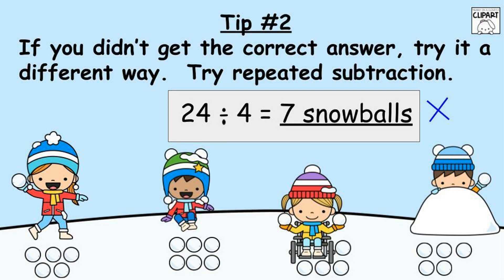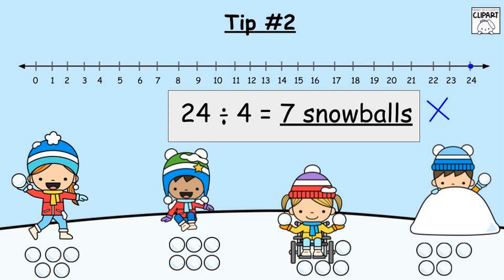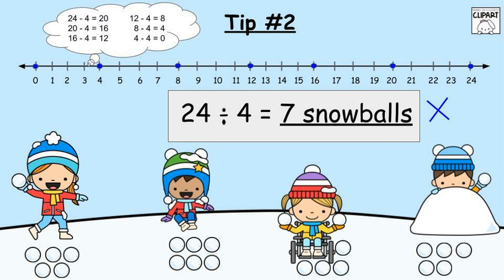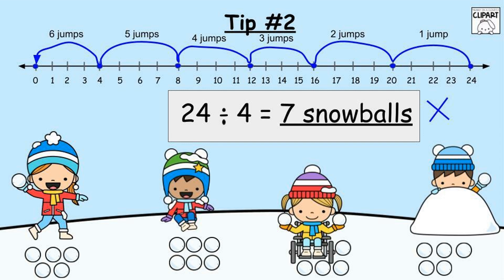Tip number two: if you didn't get the correct answer, try it a different way — try repeated subtraction. 24 divided by four doesn't equal seven snowballs. Start by making a number line from zero to 24 because there are 24 snowballs. Start on the 24 because it's your largest number. 24 minus four equals 20 — put a dot on the 20. 20 minus four equals 16 — put a dot on the 16. 16 minus four equals 12 — put a dot on the 12. 12 minus four equals eight — put a dot on the eight. Eight minus four equals four — put a dot on the four. And four minus four equals zero — put a dot on the zero. You have to stop on the zero. Now connect the dots and jump like a frog. Notice how I labeled how many times I jumped — for a total of six jumps. So it can't be seven snowballs; the answer has to be six because we had six jumps. So we fix the answer: 24 divided by four equals six.